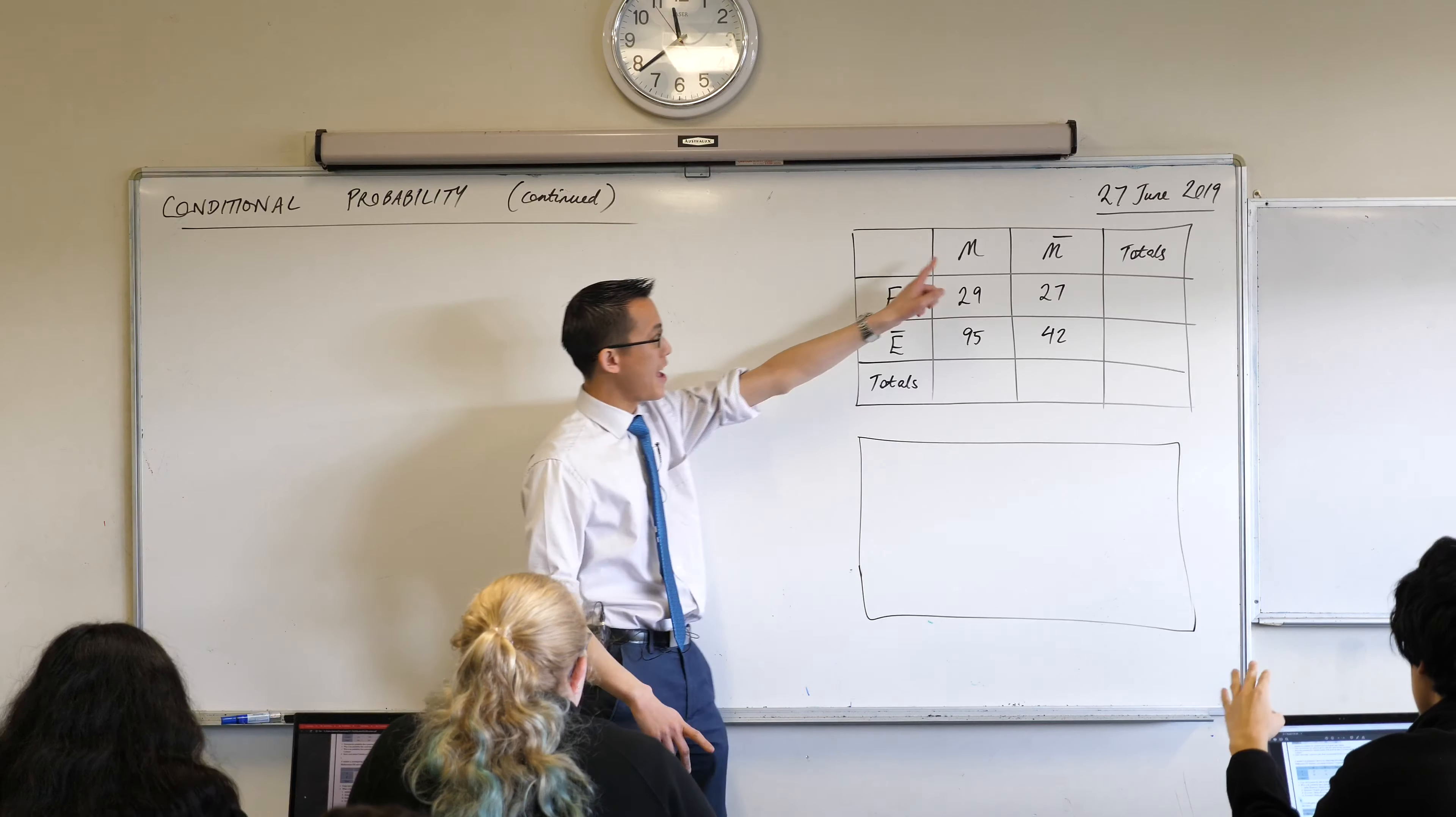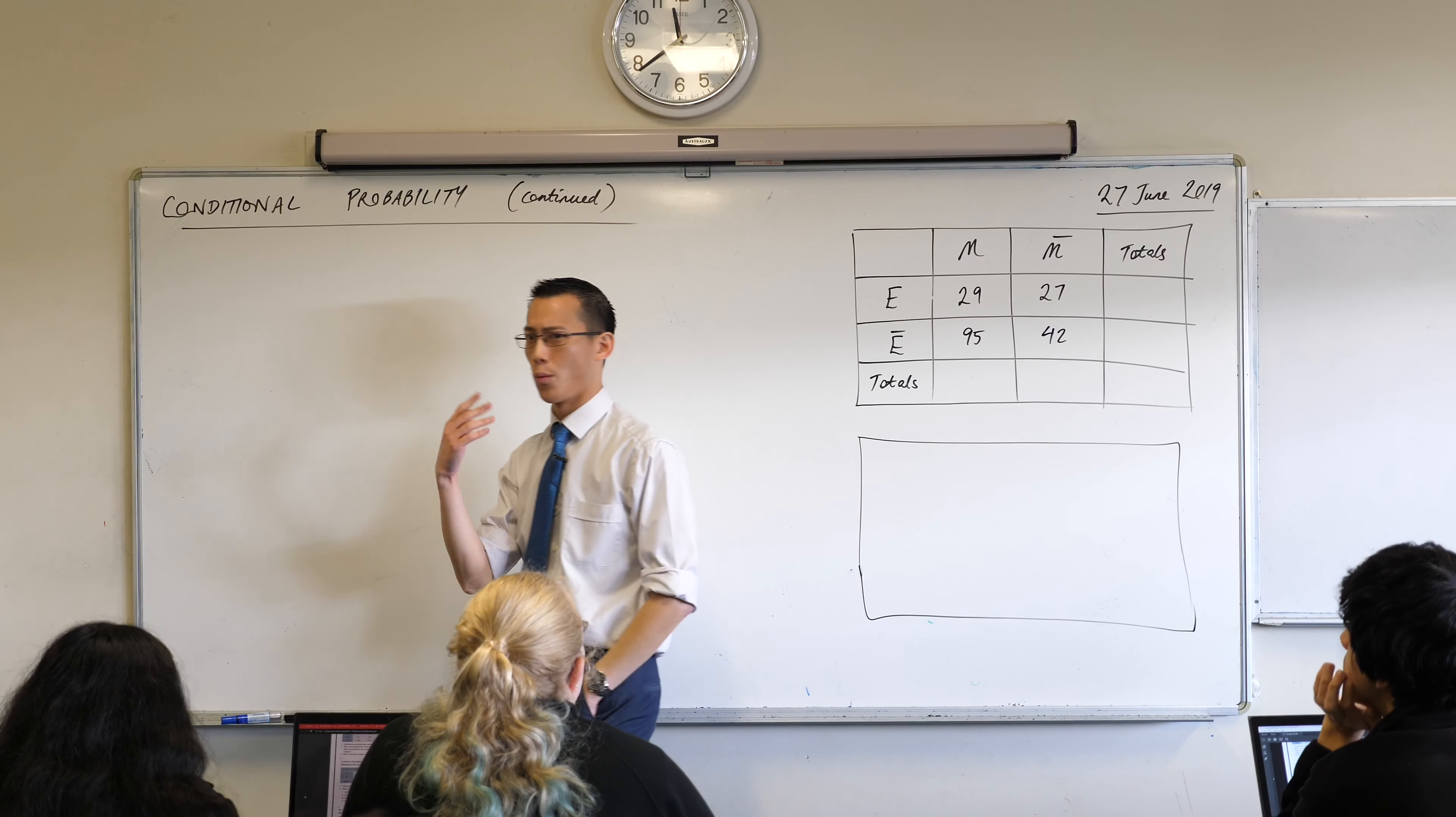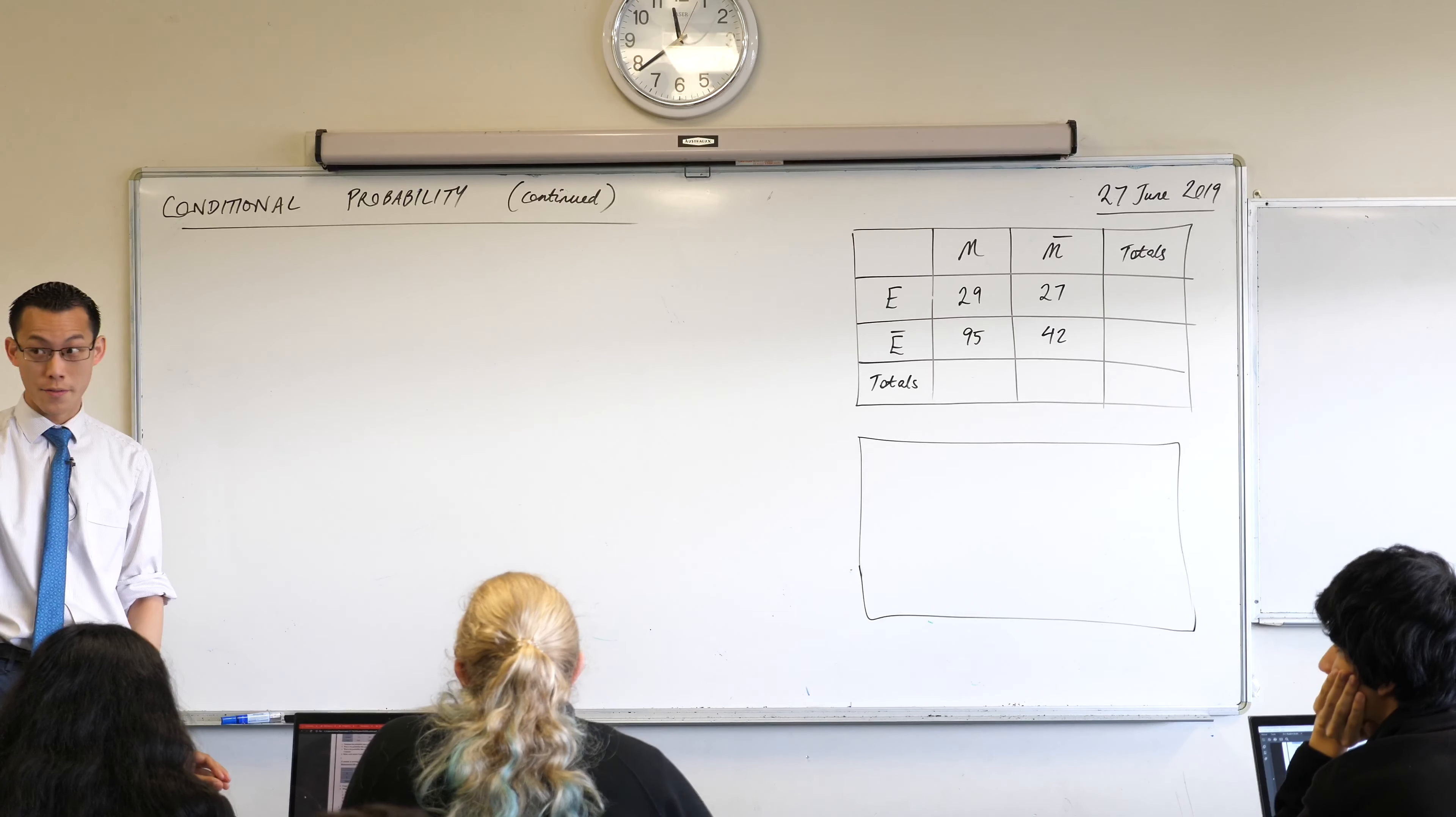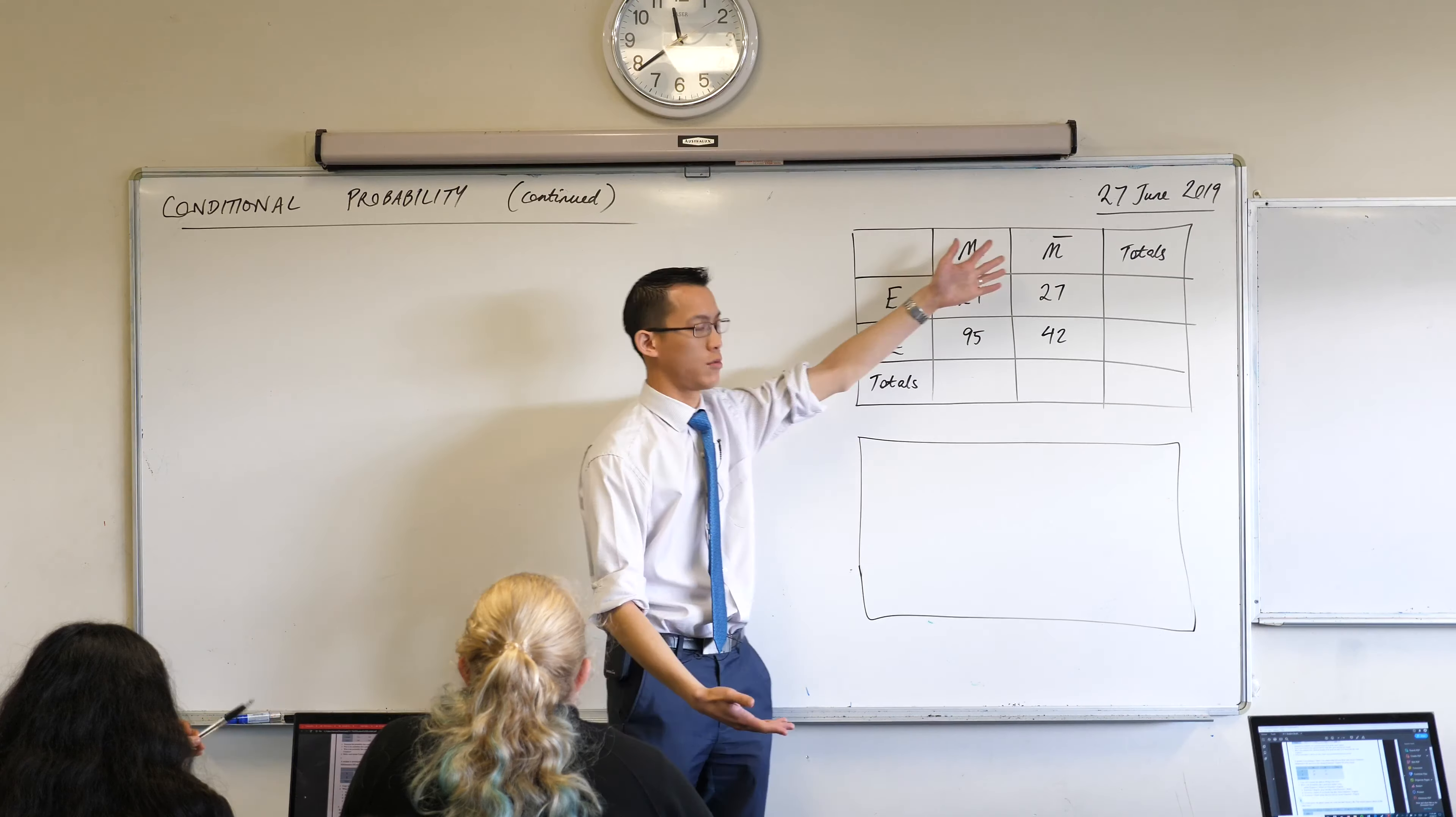You've got M for extension 1 maths, E for extension 1 English, and then you've got these other things which have bars over them. We know what this symbol means—what is being referred to here? It's the complement, very good. So very simply, extension 1 English, people who aren't doing extension 1 English, and so on for mathematics.